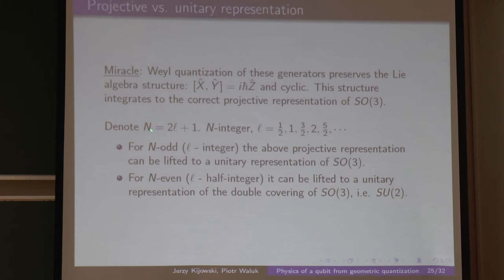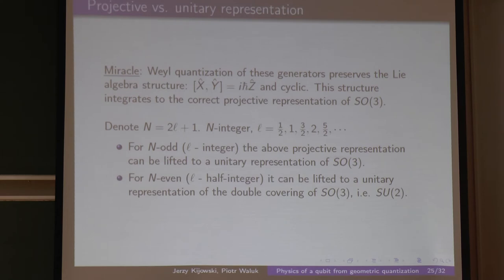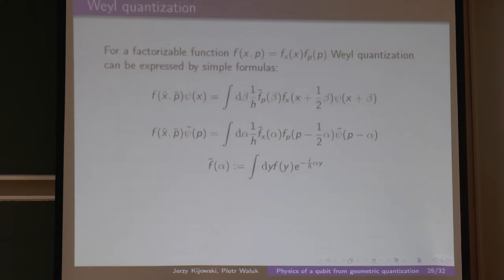For n degrees of freedom we define 2l plus n. For n even, meaning l integer, this gives a projective representation — since I never control the global phase. Once the projective representation is obtained, I may ask whether I can fix phases to manufacture a unitary representation. It turns out it is possible in some cases and impossible in others.